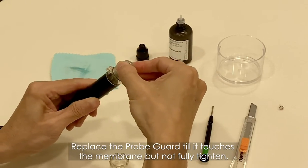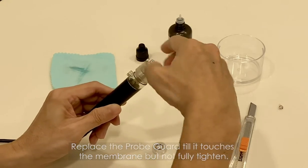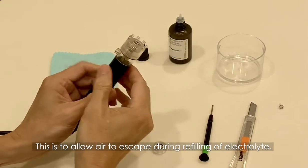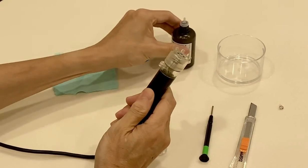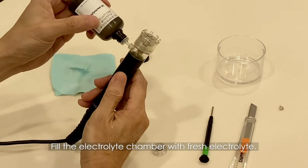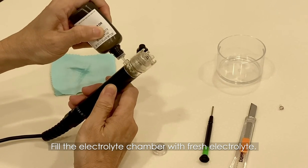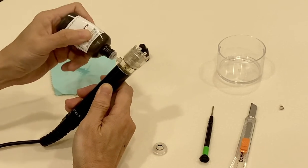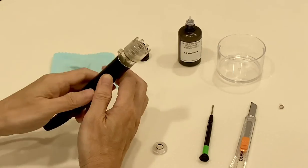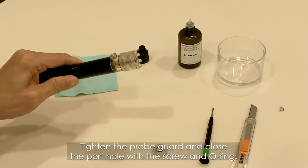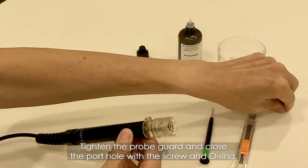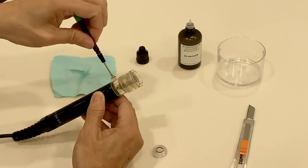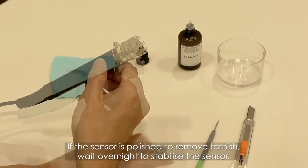Replace with a new membrane cap to fully seat it on the probe head. Replace the probe guard till it touches the membrane but not fully tightened. This is to allow air to escape during the refilling of electrolyte. Fill the electrolyte chamber with fresh electrolyte.